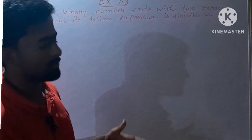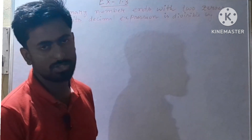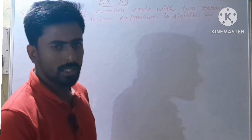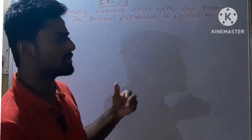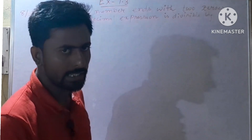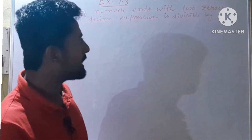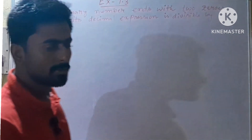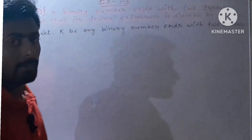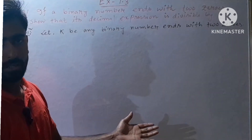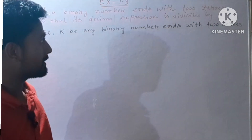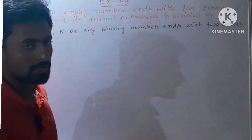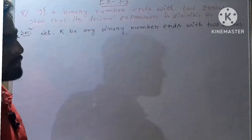So if you have a binary number, you can use digits 0 and 1. If the binary number ends with two zeros, those last two digits contribute a factor of 2 squared, making it divisible.